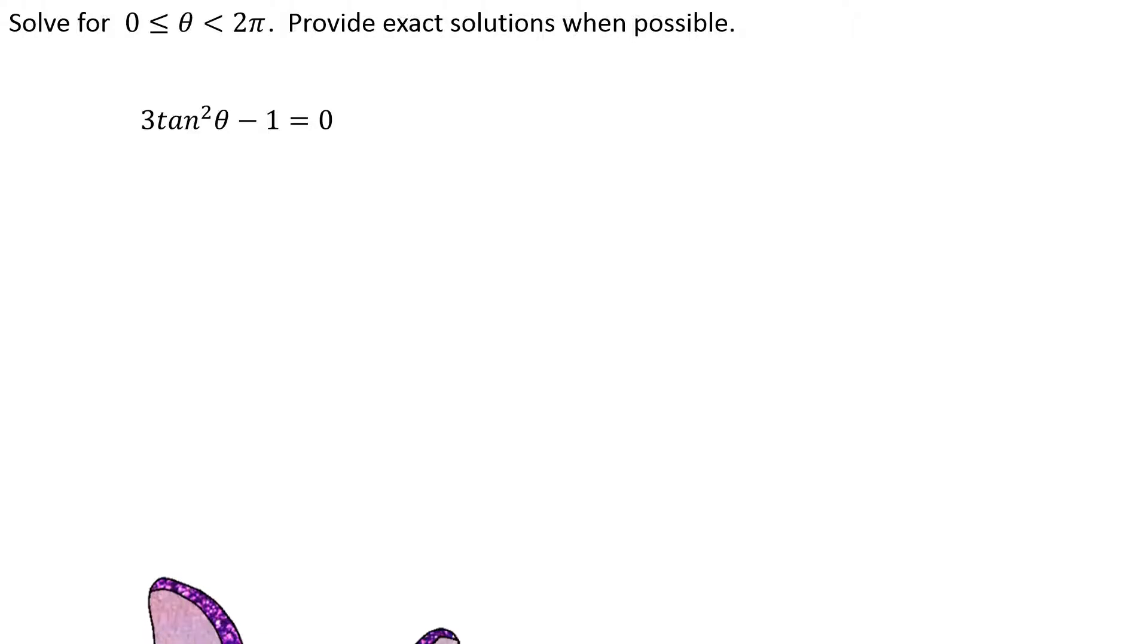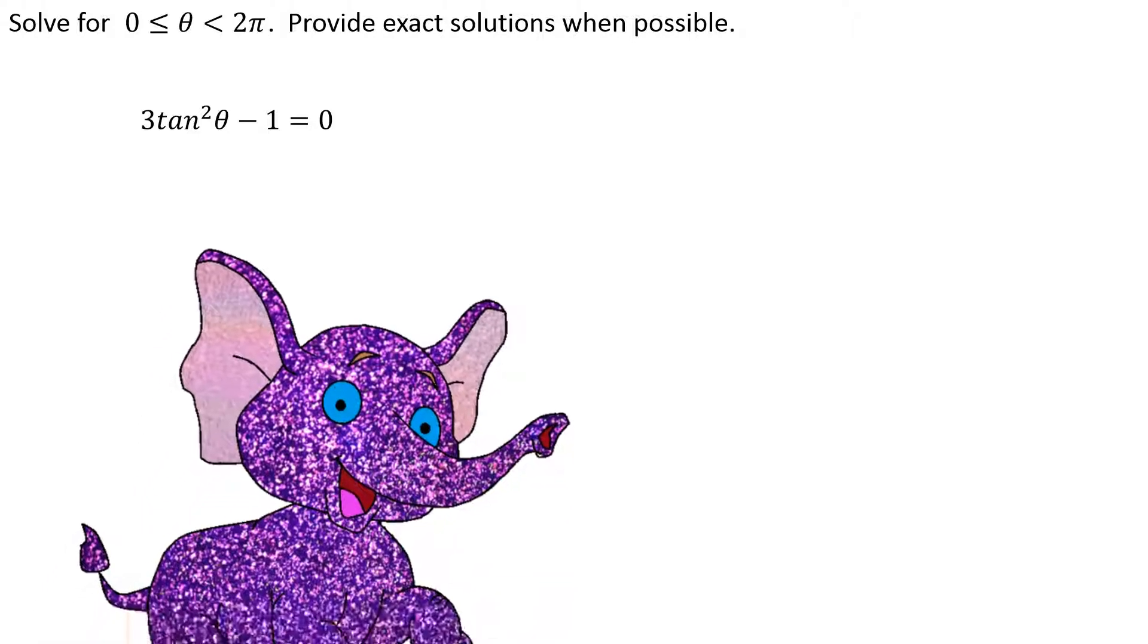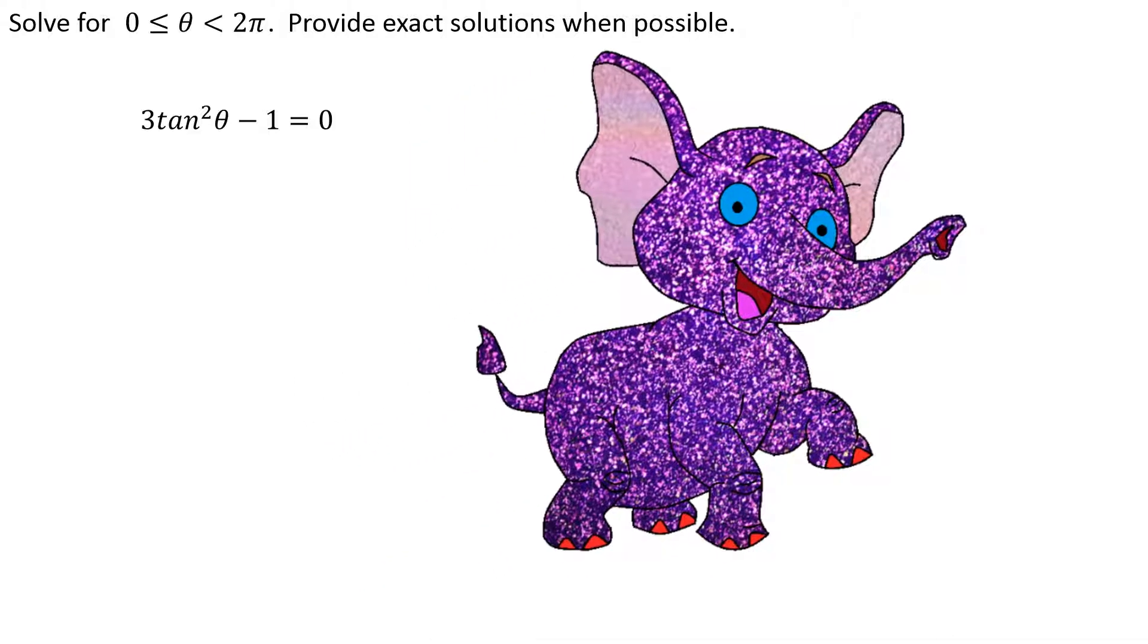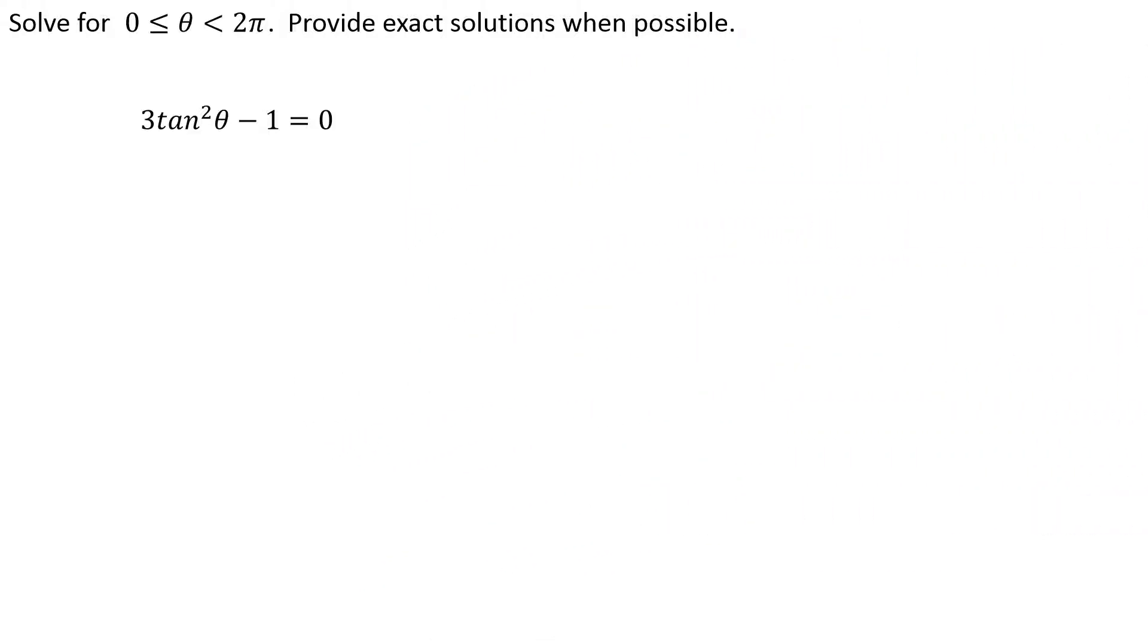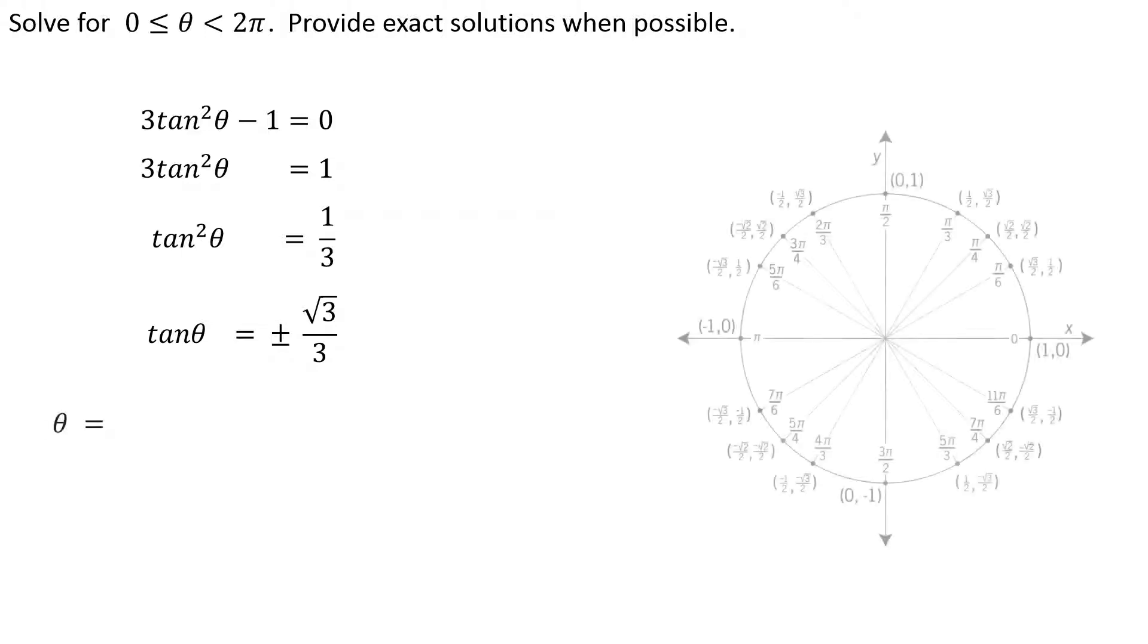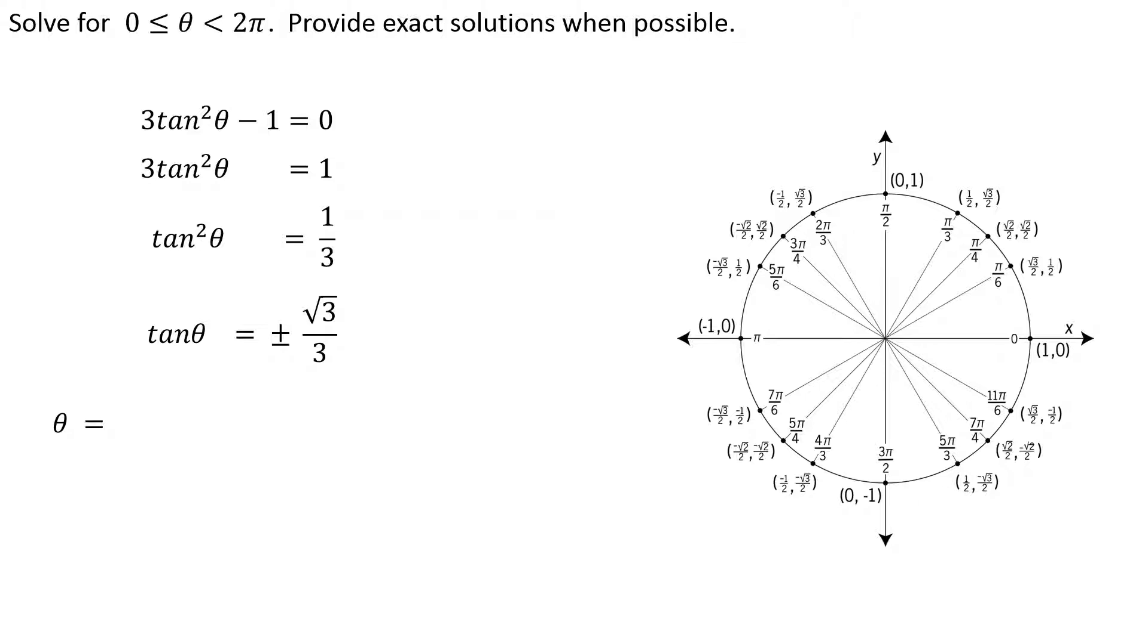Almost as fun as verifying identities: solving equations. I'm fortunate I only see theta in one spot. I can undo the order of operations: add 1 to each side, divide each side by 3, take the square root of each side. Then I gotta figure out where am I on that unit circle where tangent could be either positive √3/3 or negative √3/3. π/6, 5π/6, 7π/6.